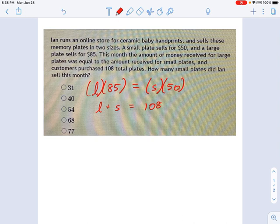So now I have two equations and two unknowns, and I can solve those for S. To solve them for S, it means I want to get rid of L. Let's just do that. Let's say L equals 108 minus S. I just rearranged this equation just a little bit.